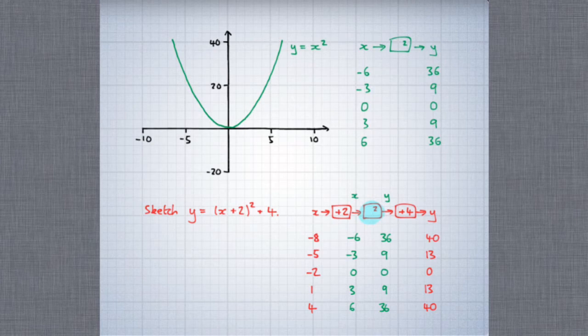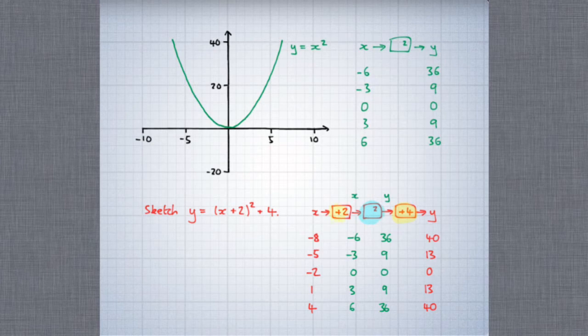Now we can see what transformations need to be performed. First of all, the y-coordinates are all 4 more than they used to be, so the plus 4 means that the entire graph moves 4 units up — that's a translation of 4 units parallel to the y-axis. The x-coordinates are all 2 less than they used to be, so the plus 2 means that the graph shifts 2 units to the left — a translation parallel to the x-axis.